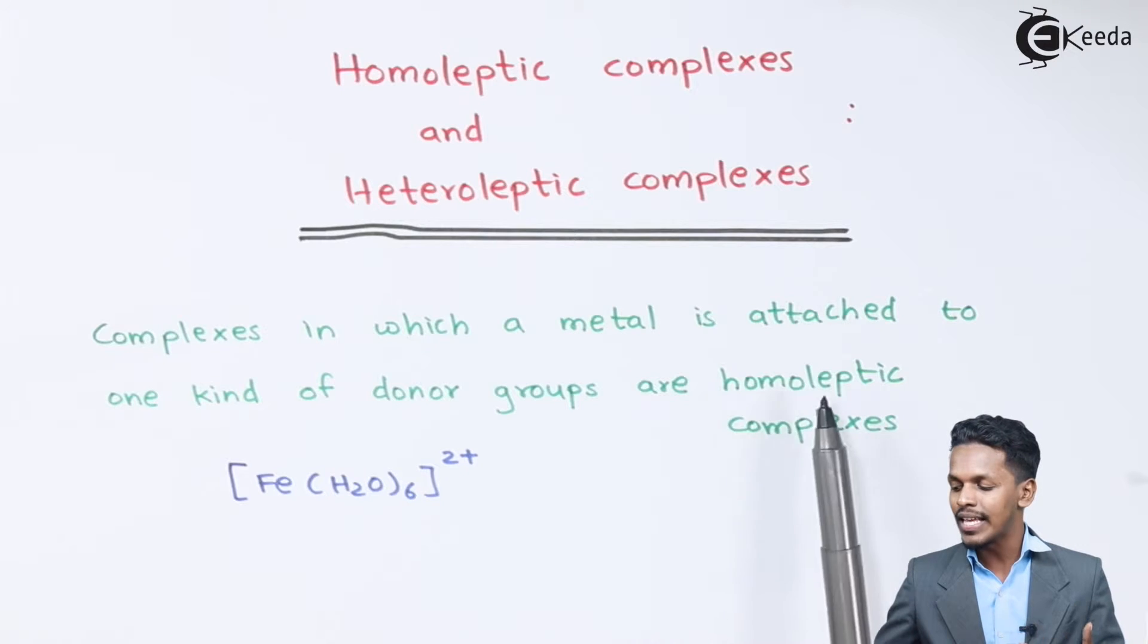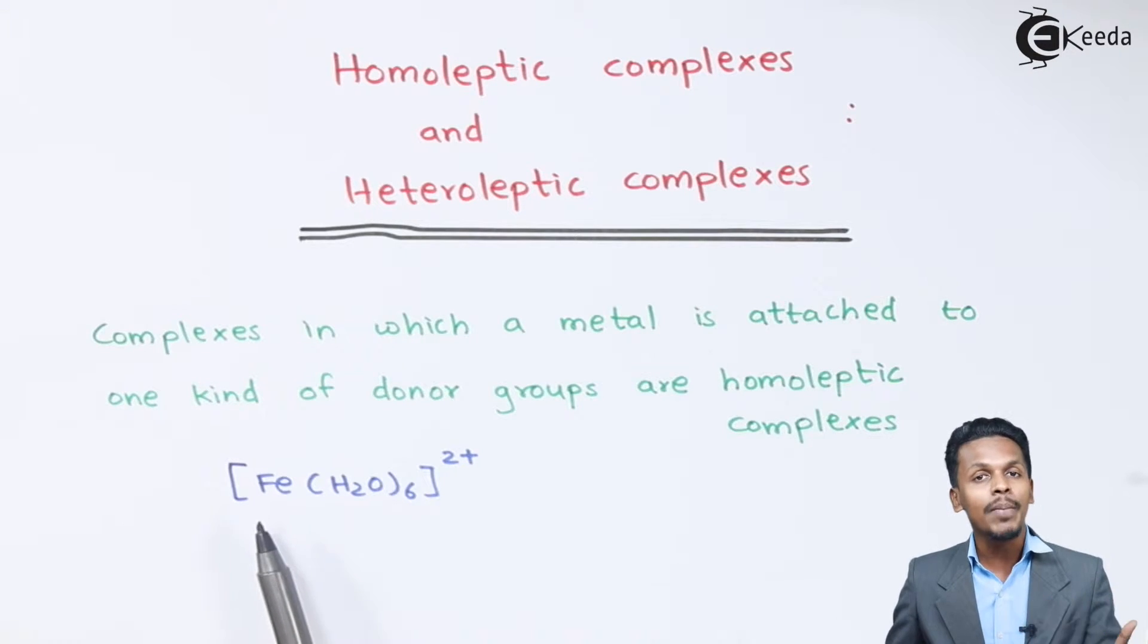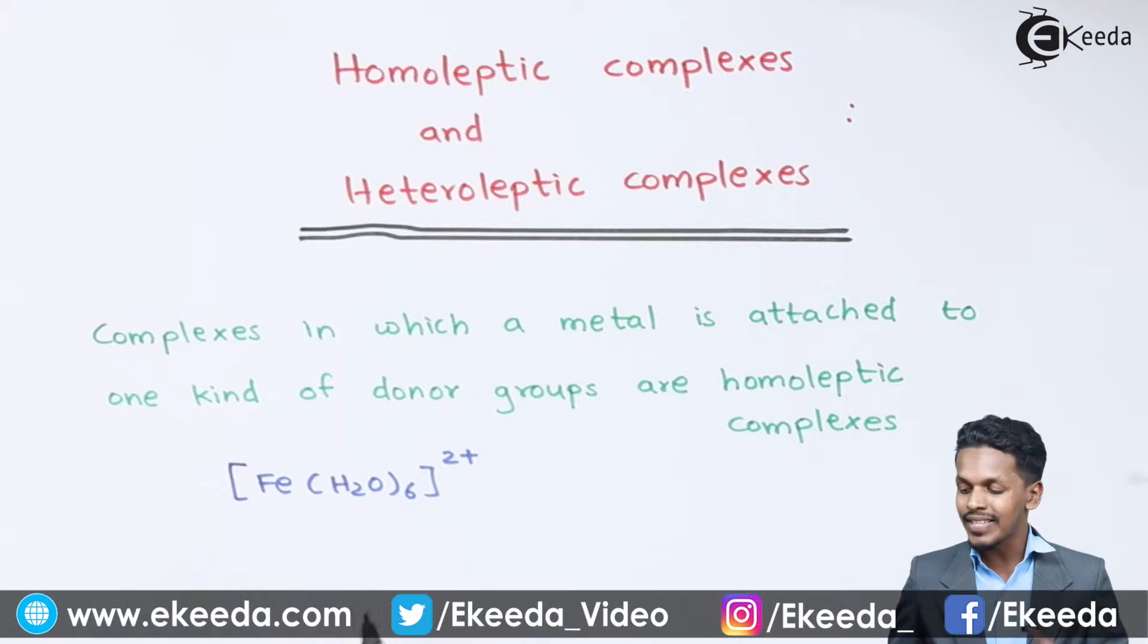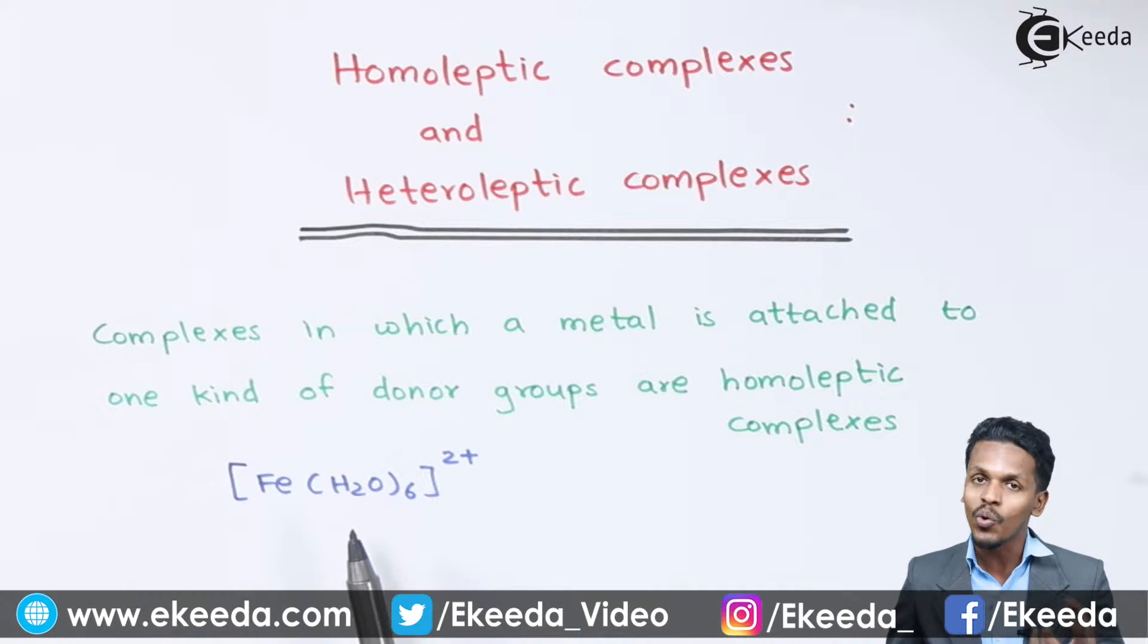For example, in this case, the central metal atom is iron and this iron is surrounded by six water molecules. Only one kind of donor atom is there, that is water molecules, and that's the reason that this is known as a homoleptic complex. So now let us understand what is heteroleptic complex.